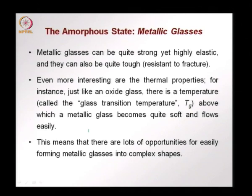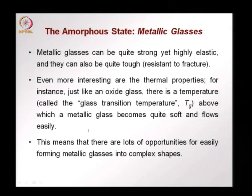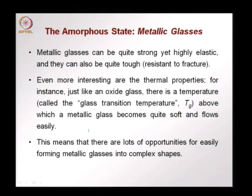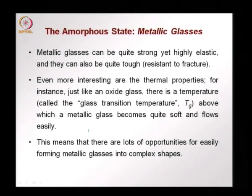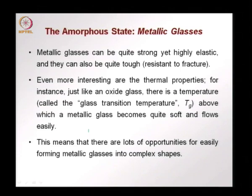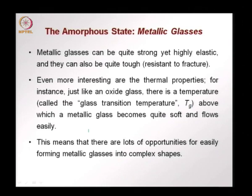Just like an oxide glass, in metal glasses there is also a glass transition temperature. This is the temperature above which a metallic glass becomes soft, like what we see in other amorphous materials such as polymers. Above the glass transition temperature Tg, the metal glass becomes soft and flows easily.